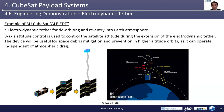The last example is the electrodynamic tether. This is the 3U CubeSat AEDT. The payload is an electrodynamic tether for de-orbiting and re-entry into Earth's atmosphere. Three-axis attitude control is used to control the satellite attitude during the extension of the electrodynamic tether. The device will be useful for space debris mitigation and prevention in higher-altitude orbits, as it can operate independent of atmospheric drag. I hope you now have a deeper understanding and clearer ideas of what you can achieve by means of CubeSats.